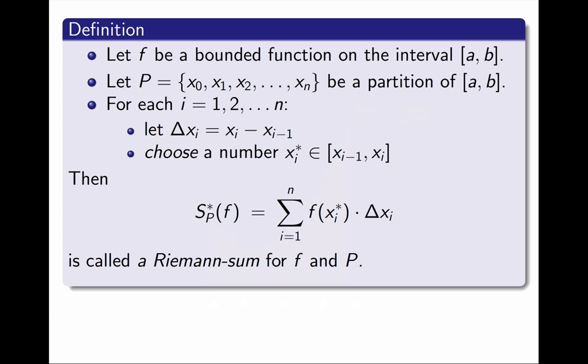So, even after fixing the function and the partition, there are lots of other Riemann sums. I am going to denote this Riemann sum as S*_P(f). The star in the name indicates that the Riemann sum depends on the choice of point on each subinterval.